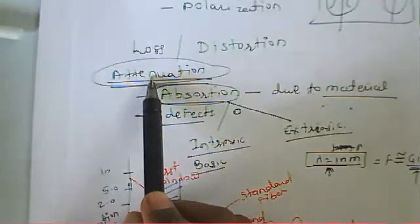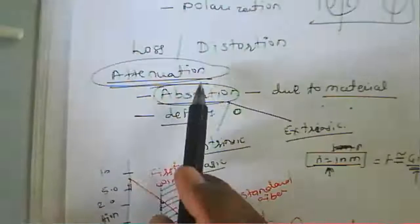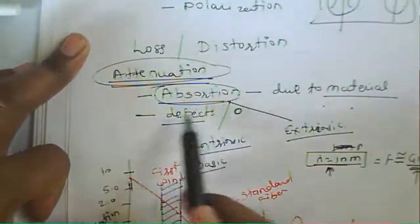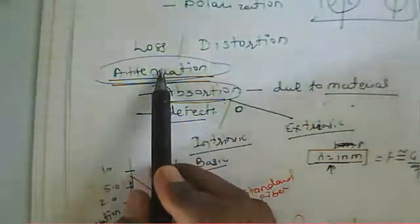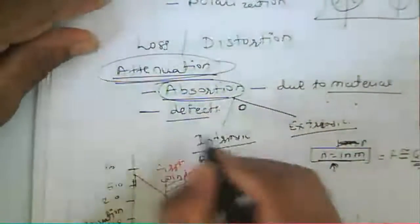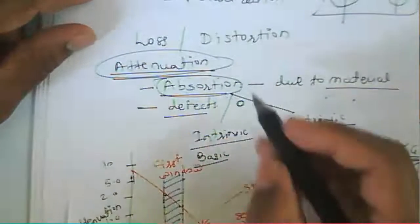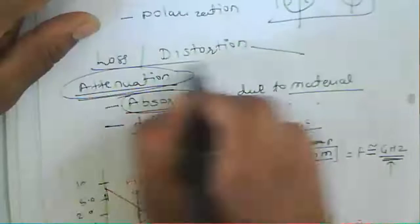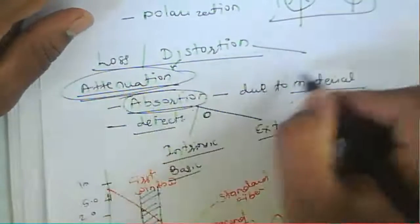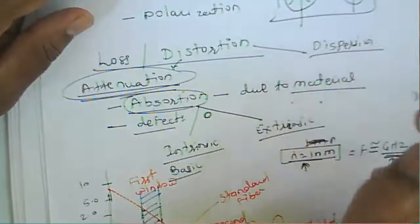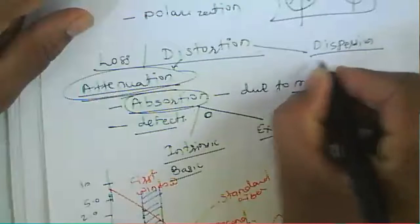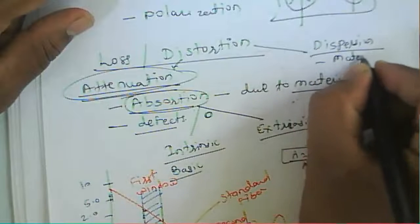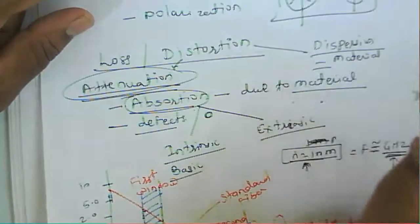Absorption also takes place because the fiber has bends — micro bending or macro bending — causing signal distortion. Signal distortion takes place because of attenuation, which is due to absorption from material or defects, scattering, fiber bending loss, or modal noise. There are two types of signal distortion: attenuation and dispersion.